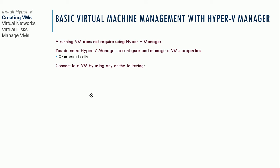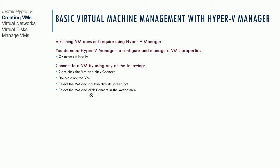A running VM does not require Hyper-V Manager to access it. Once your VM is running, you can connect by double-clicking the VM, selecting it and clicking Connect in the Action menu, or simply RDP directly to that machine just like any other computer. The keyboard, monitor, and mouse are on the host, but all remote access tools apply. If you spin up a VM running Server Core, you can connect with your management tools just like any other Windows server.